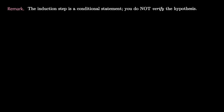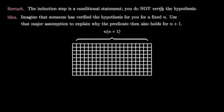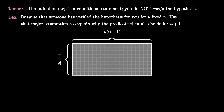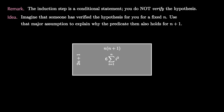Let's finish with a few comments about the proof we just completed. An important thing to note is that the induction step is a conditional statement — you do not verify the hypothesis. Instead, the idea is to imagine that someone else has already verified the hypothesis for a fixed n, and then you use that major assumption to explain why the predicate holds for n plus 1. For example, in the sum of squares formula, we have a grid with width n times n plus 1 and height 2n plus 1, and we take it on faith that someone has already verified this equals 6 times the sum of i squared from 1 to n.